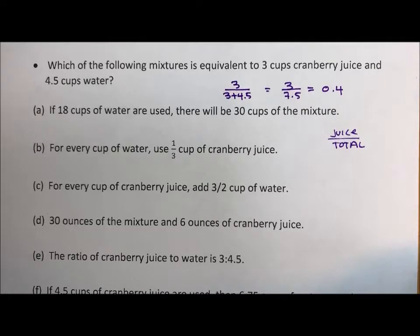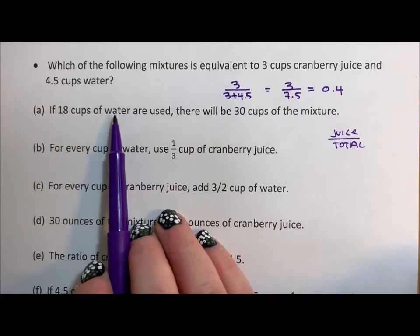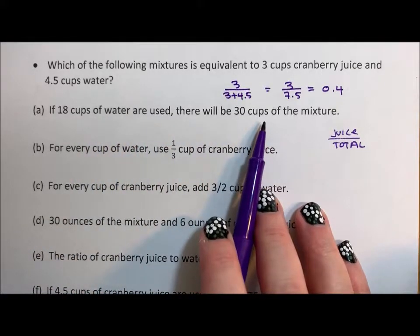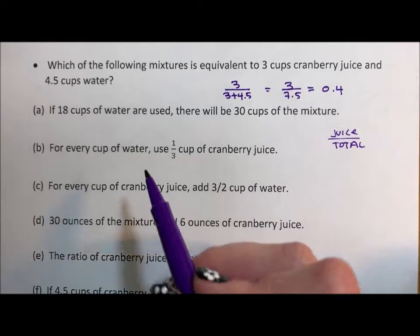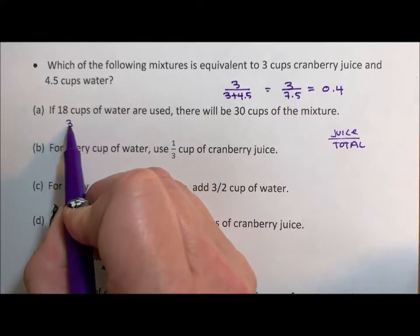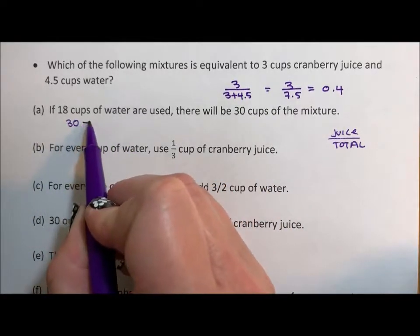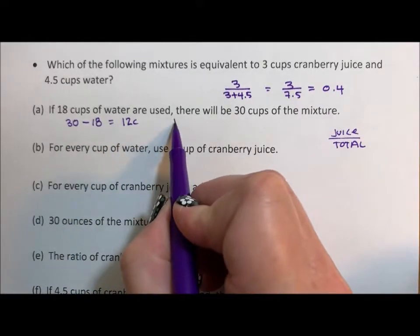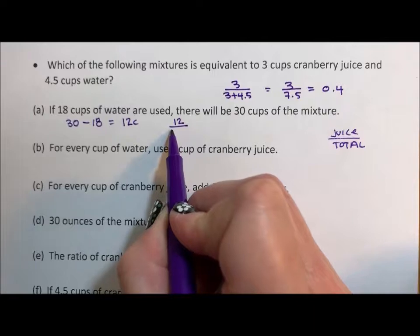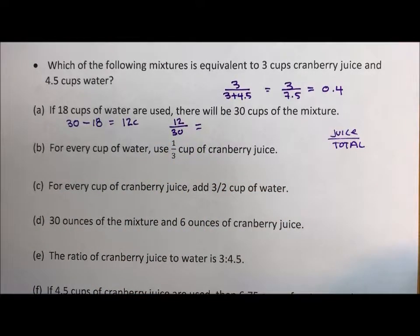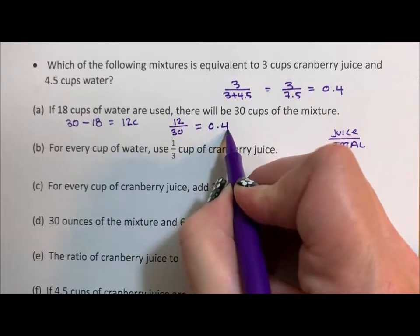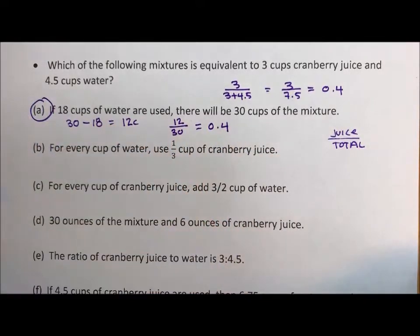Okay so for our first one we have 18 cups of water and 30 cups of mixture. Well this one's tricky because we have water and mixture, we need to figure out cranberry juice. So we take the 30 cups of mixture, subtract the 18 cups of water and find out we have 12 cups of cranberry juice. So it's 12 cups of cranberry juice to 30 cups of mixture. 12 divided by 30 is 0.4, so this one is indeed an equivalent match.